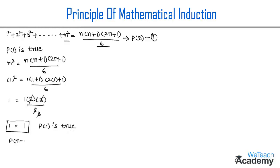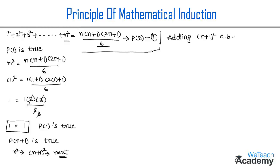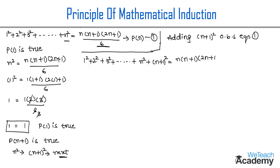Now let us assume P(n) is true and prove P(n+1). Substituting n with n+1, the next term of the series becomes (n+1)². Adding (n+1)² to both sides of equation 1, we get 1² + 2² + 3² + ... + n² + (n+1)² = n(n+1)(2n+1)/6 + (n+1)².